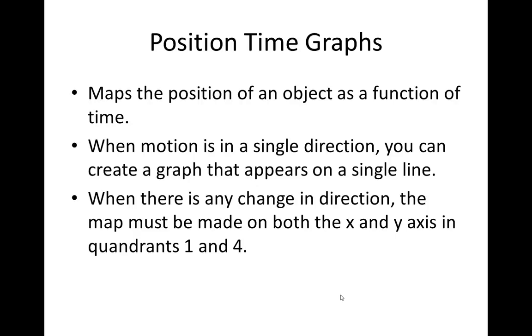When motion is in a single direction, you can create a graph that appears on a single line. Once it changes direction, it becomes difficult to evaluate that motion. So you need to go to an XY coordinate system where motion that is positive with respect to the reference point is in quadrant one, and motion that is negative relative to the reference point is in quadrant four.